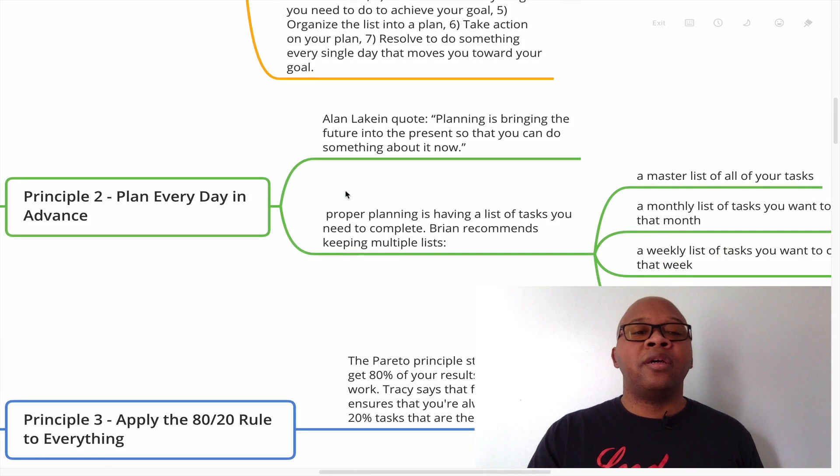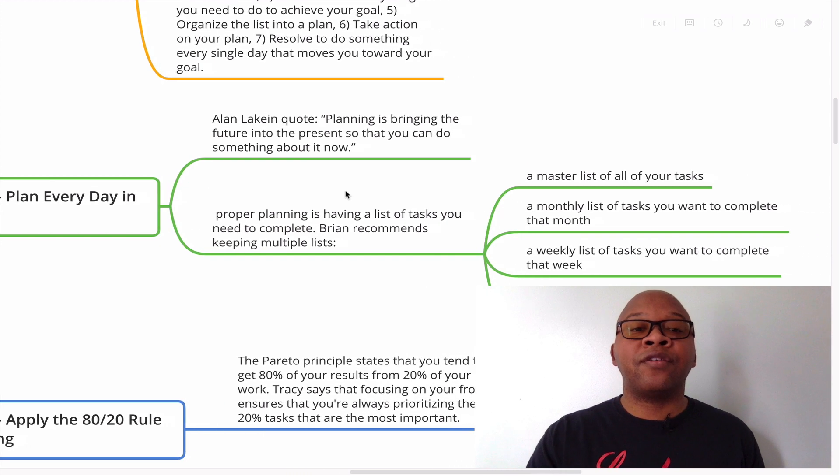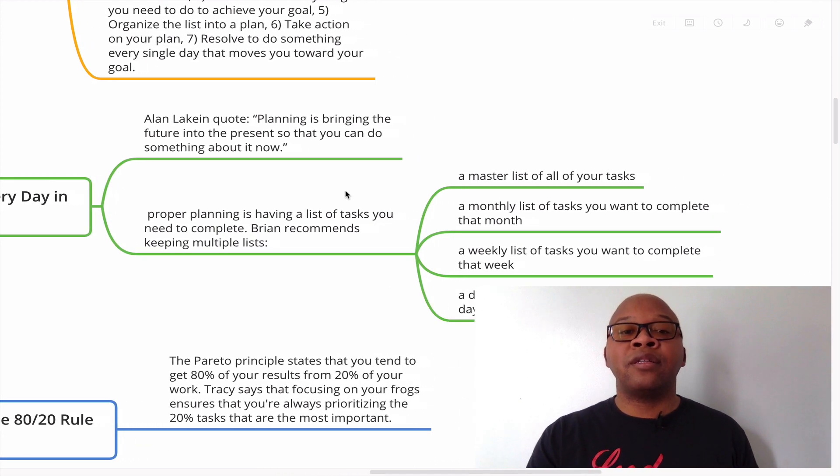Principle number two is plan every day in advance. I like this quote in the beginning of the chapter that reads, planning is bringing the future into the present so that you can do something about it now. Proper planning is having a list of tasks you need to complete. Brian recommends working from a list. He says to always work from a list.